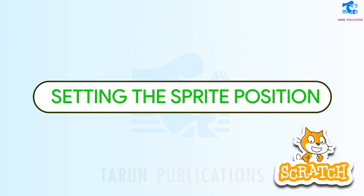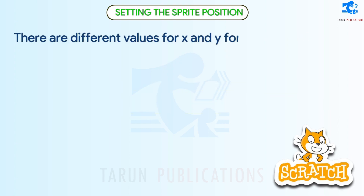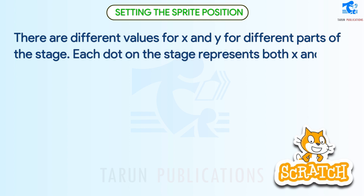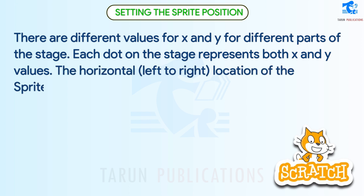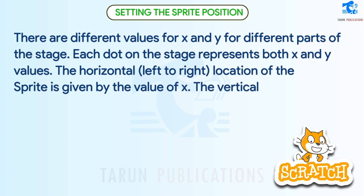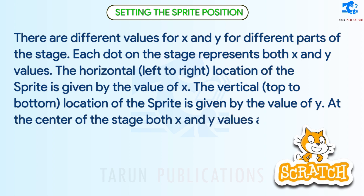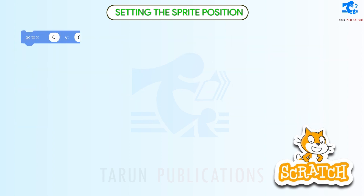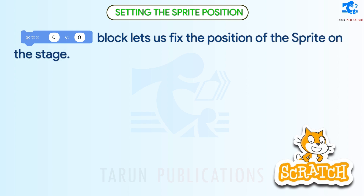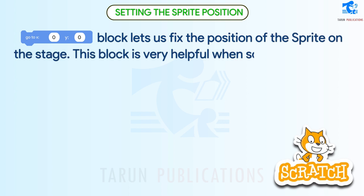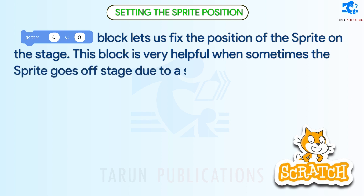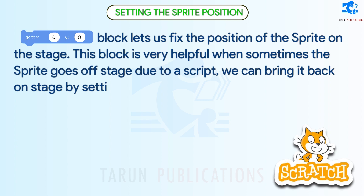Setting the sprite position: there are different X and Y values for different parts of the stage, and each dot on the stage represents both X and Y values. The horizontal left-to-right location of the sprite is given by the value of X, and the vertical top-to-bottom location is given by Y. At the center of the stage, both X and Y are equal to zero. A block lets us fix the position of the sprite on the stage — this is very helpful when the sprite goes off stage due to a script, and we can bring it back by setting its position.